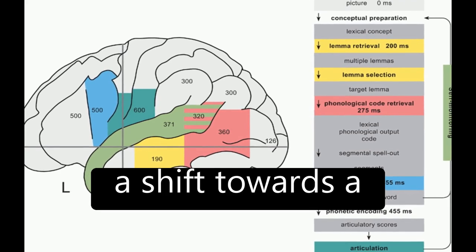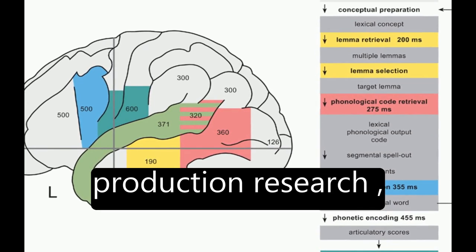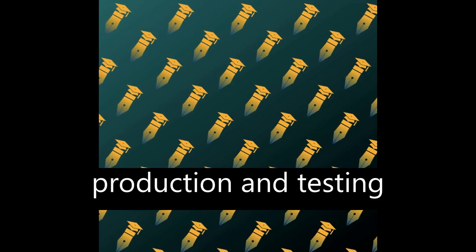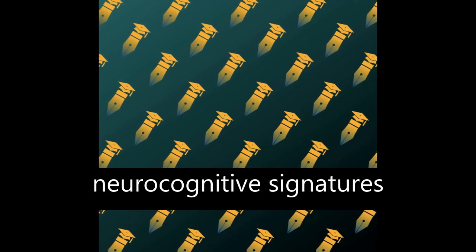Recently, there has been a shift towards a hypothesis testing approach in neurocognitive word production research, which involves designing experimental variables to modulate single-component processes of word production and testing for predicted effects on spatial or temporal neurocognitive signatures.